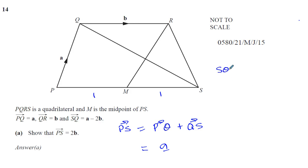So if SQ is A minus 2B, then QS, you're going in the opposite direction, it must be minus A plus 2B. Opposite sign, so you can say 2B minus A. So you're going to have A, and you're going to have minus A plus 2B. So that gives you 2B. And that's what we have to prove, that's part A done.